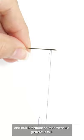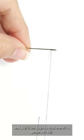To tie a knot, loop the end of the thread around your finger, then roll the loop between your fingers two to three times. Pinch the rolled thread between your fingers and pull the thread tightly.